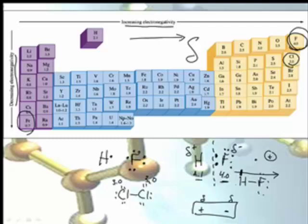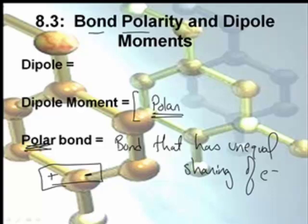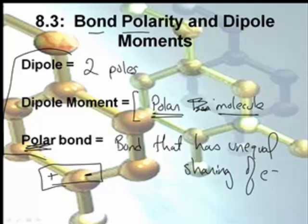So a dipole moment is a polar molecule. Yeah, it's basically just saying that something has a plus end and a minus end. And a dipole just means you've got two poles. Really they're all kind of saying the same thing, but I want to make sure you understand that because in the AP test sometimes they use different terms.